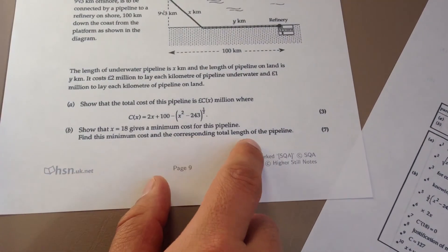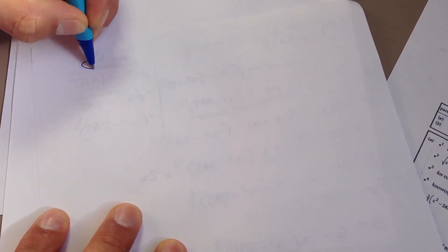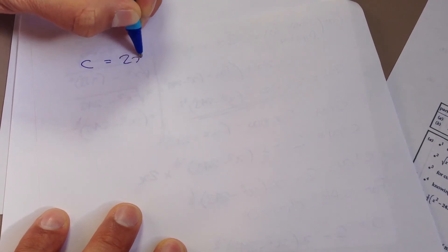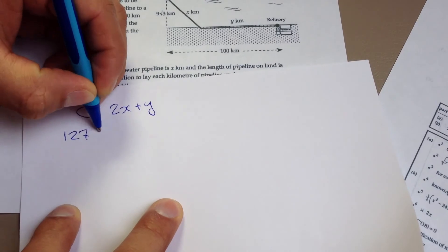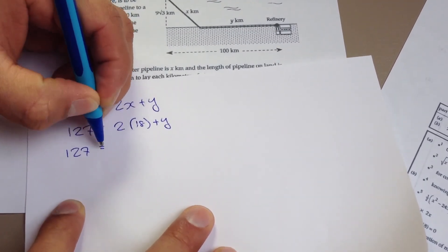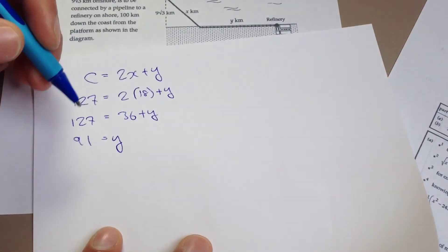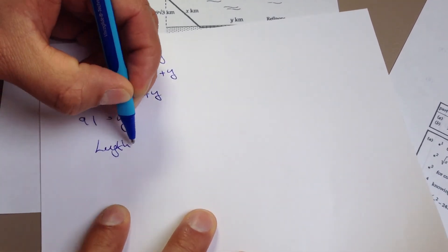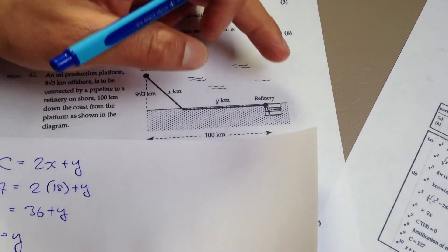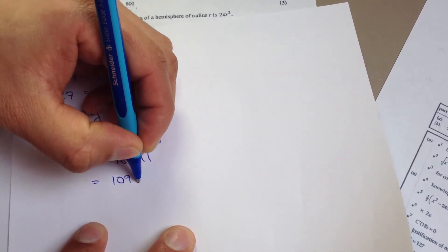What do we need to do next? Next we need to find the corresponding total length of the pipeline. So the total length will basically be, we knew that the cost is 2x plus y. And we know that the cost is 127. And we know x is 18, so we'll just do 2 times 18 plus y. And that will enable us to work out what y is. So that's 127 equals 36 plus y. And let me just pop that into the calculator to see what it works out to be. So that's going to be 91. So y equals 91. And hence, now that we know what y is, the length is just x plus y. Because there's x and there's y. So if we know x is 18 and we know y is 91, that means the length is just going to be 18 plus 91. And it works out to be 109 kilometers. And that's it.